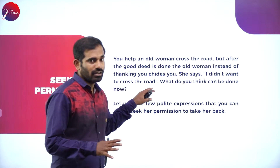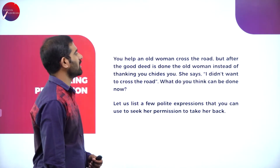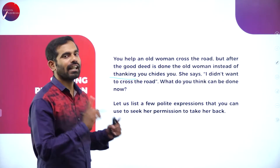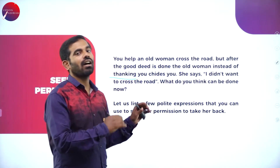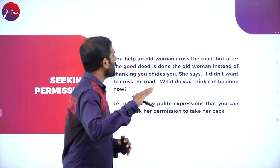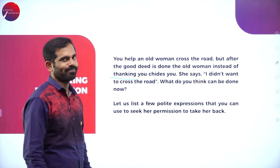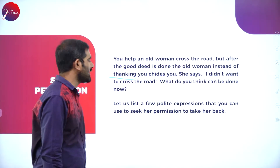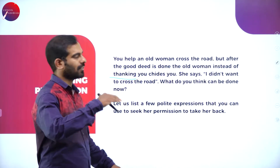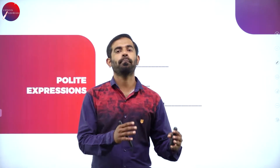Here is a situation. Remember this: you help an old woman cross the road, but after the good deed is done the old woman, instead of thanking you — remember, I always tell you, you cannot add '-ing' for 'thank' and 'love,' but still these mistakes are done repeatedly in your workbook and textbook — instead of thanking you, she chides you, she scolds you. She says, 'I didn't want to cross the road.' What do you think can be done now? Let us list a few polite expressions that you can use to seek her permission to take her back.